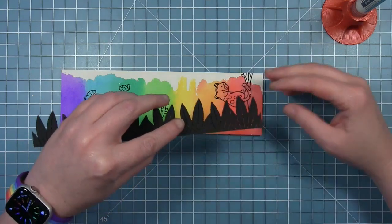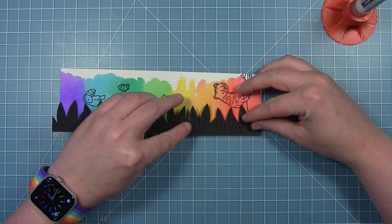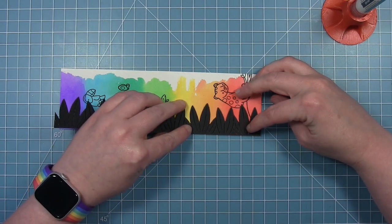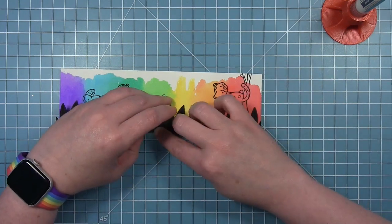I'm adding some liquid glue to my leaves that are die cut, and I'm just going to line that up right against this left edge of the bookmark.